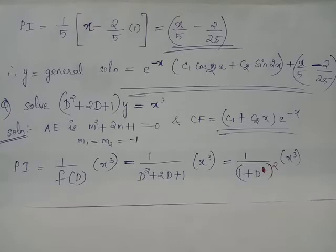Therefore, the complementary function will be of the form (c₁ + c₂x) multiplied by e raised to minus x.